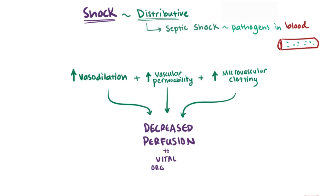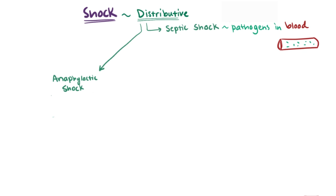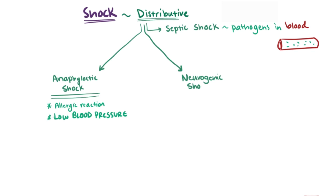Two subtypes of distributive shock are anaphylactic shock, which is an allergic reaction that causes dangerously low blood pressure, and neurogenic shock, where the nervous system gets damaged and can't control the body's blood pressure.